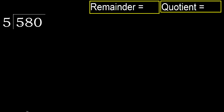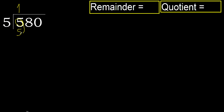580 divided by 5. 5 is not less, therefore we start with 5. 5 multiplied by which number is nearest to 5, but not greater? 5 multiplied by 2 is 10, which is greater. Multiplied by 1 is 5, which is not greater. 5 minus 5 is 0. Next.